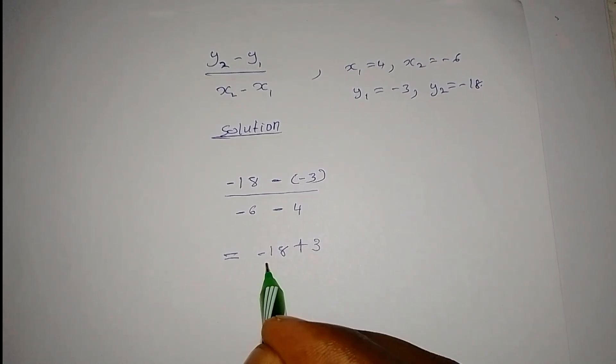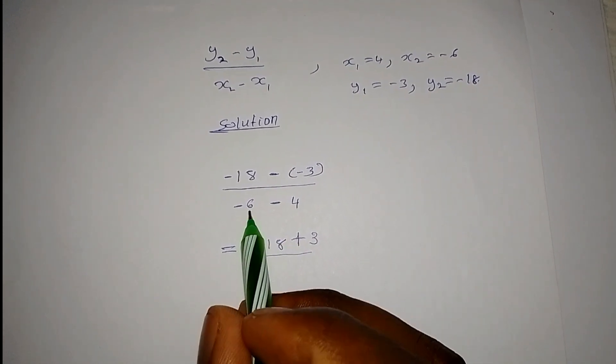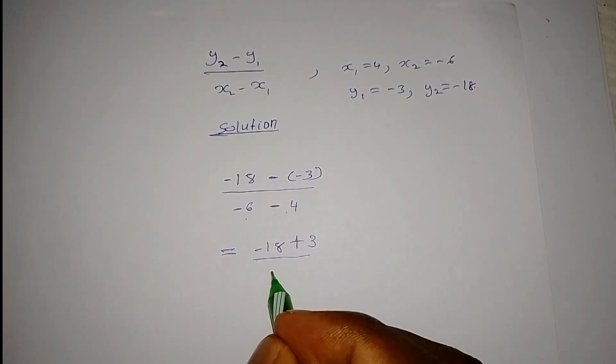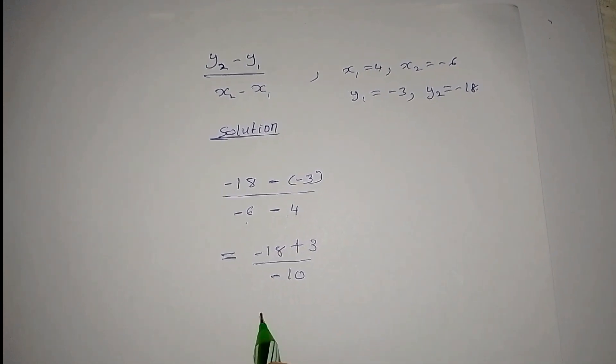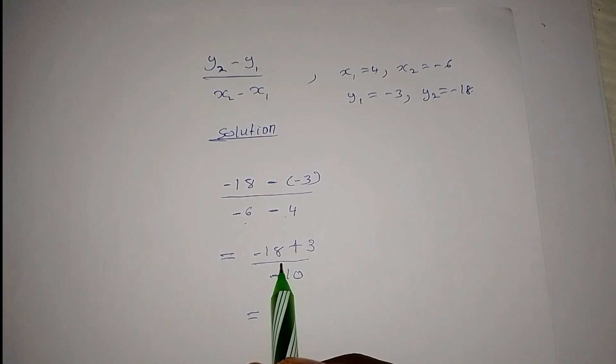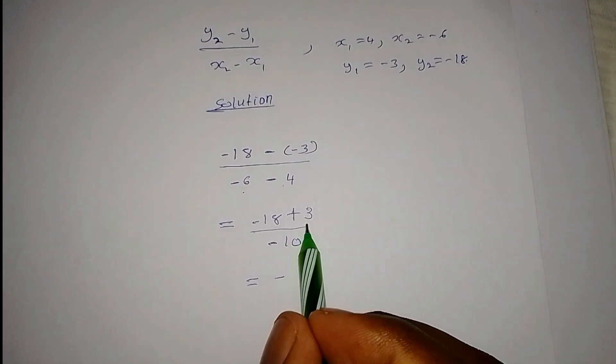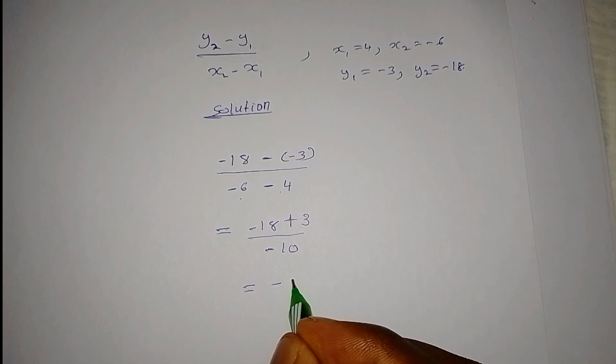divided by negative 6 minus 4. You're going to get negative 10. This becomes negative 18 plus 3, which gives negative 15